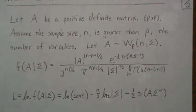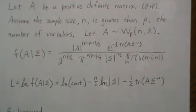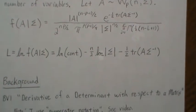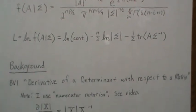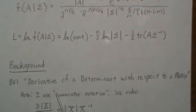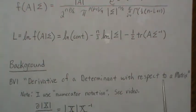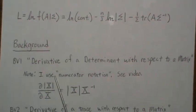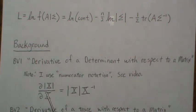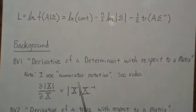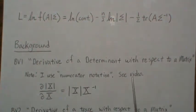Now to take the derivative of this associated with sigma, I have some background videos I want to point out here. So background video one, I call the derivative of a determinant with respect to a matrix, and this is the answer. But before I do that, I should note that I use what's called numerator notation.